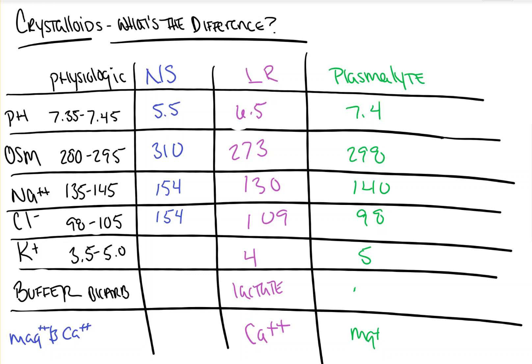And the other difference, the last difference, is that rather than lactate, it contains acetate as its buffer. Now, acetate is converted by many tissues, not just the liver, not just the kidneys, which helps make it better in patients with liver or kidney failure, but also helps convert the buffer into bicarbonate faster than lactate.